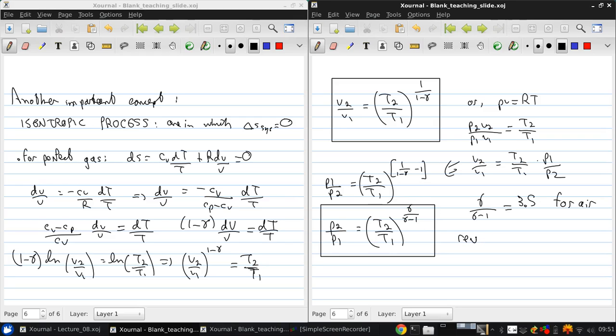Also, if a process is reversible and adiabatic, meaning there's no heat transfer, then it's isentropic. But note this is a one-way arrow. An isentropic process is not necessarily a reversible and adiabatic process.